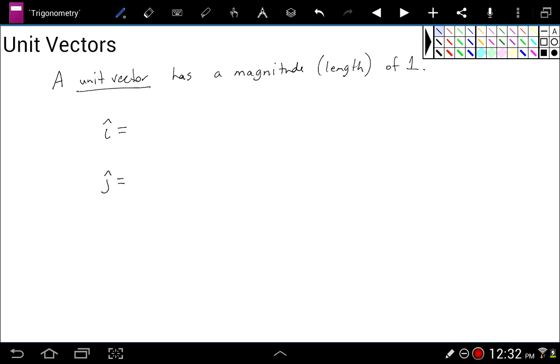So vector i is the horizontal unit vector. If I were to write it in component form, it would be the unit vector one comma zero, and it looks like this. It points directly to the right, and its length is one, and it has a zero vertical component.